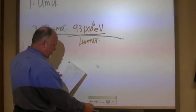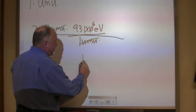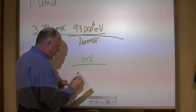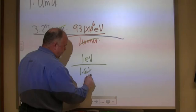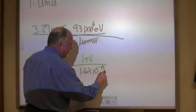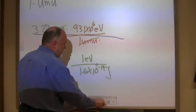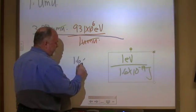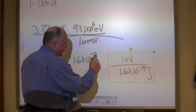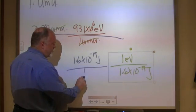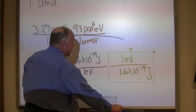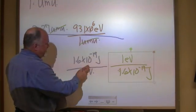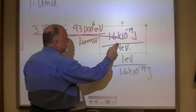And I happen to have that conversion factor. One electron volt is equal to, and I just look it up, 1.6 times 10 to the negative 19 joules. Which I can write as 1.6 times 10 to the negative 19 joules is equal to 1 electron volt. So let's see which one do I want to use. I got EV above. I got EV below. I'm going to use this one.